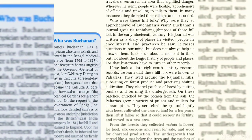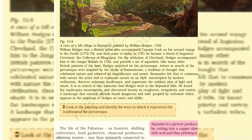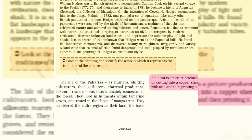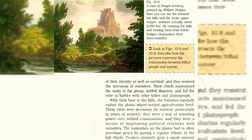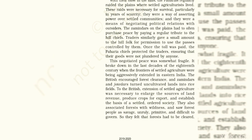The Santhals were generally settlers, while the Paharias were hunters, shifting cultivators, and food gatherers. Later on, the Paharias revolted against the British. The Santhals also revolted because they had been made to clear forest land to build settlements, and later many taxes and other burdens were imposed on them.